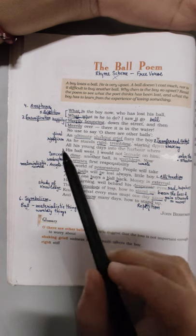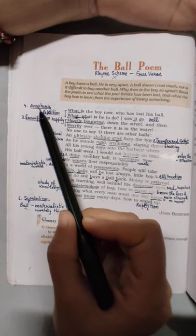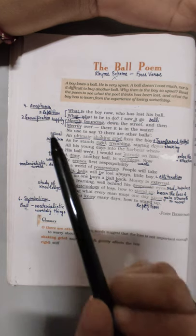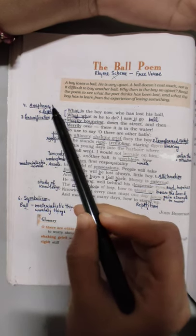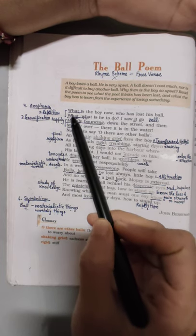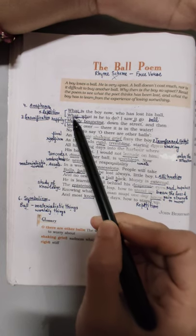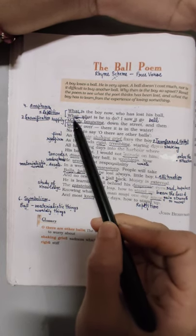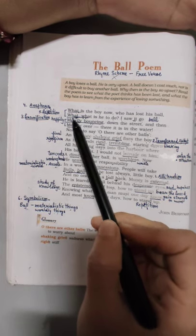Uske baad hum yahi par wapas aate hai. Now fourth device hai anaphora. Anaphora kaha pe use hota hai, let us see. Jab kisi word ko ya group of words ko lagataar kuch lines mein use kiya jata hai in the starting of the lines. Toh yaha par dekhe 'what' word ka use kiya gaya hai. Next line mein bhi next line ki starting woh word se hi ki gai hai. Toh yaha par kaun si device hai - yaha par anaphora hai.